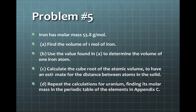As stated in this problem, iron has a molar mass of 55.8 grams per mole. We are supposed to find the volume of one mole of iron, then determine the volume of one iron atom and estimate the distance between atoms in the solid by taking the cube root of that. And we are supposed to repeat the calculations for uranium.